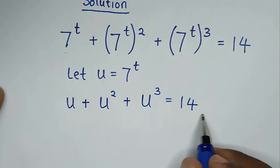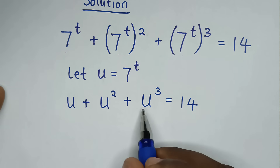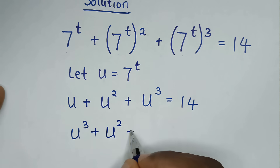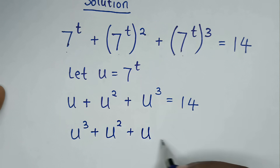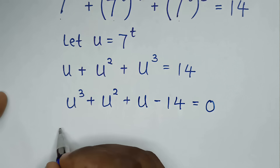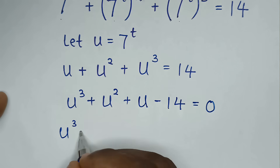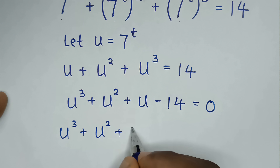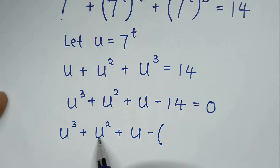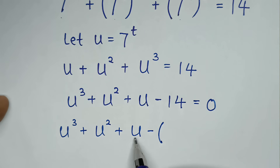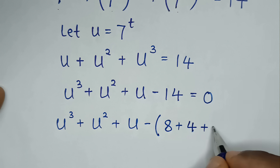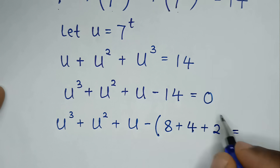Then we will take 14 to this side, so it will be minus 14 is equal to 0. Then in the next step, it will be u cubed plus u squared plus u, then minus 14. We split 14 according to the exponents: 14 is the same as 8 plus 4 plus 2, in brackets, is equal to 0.